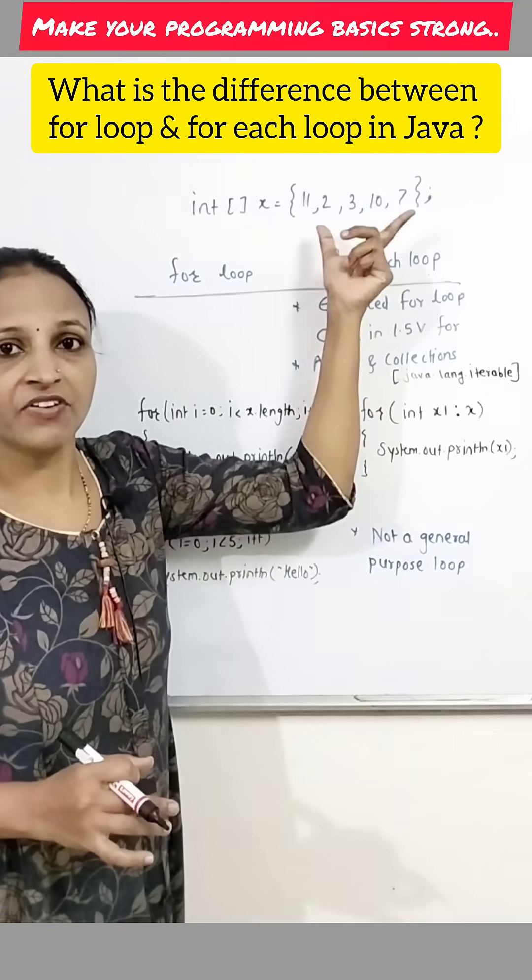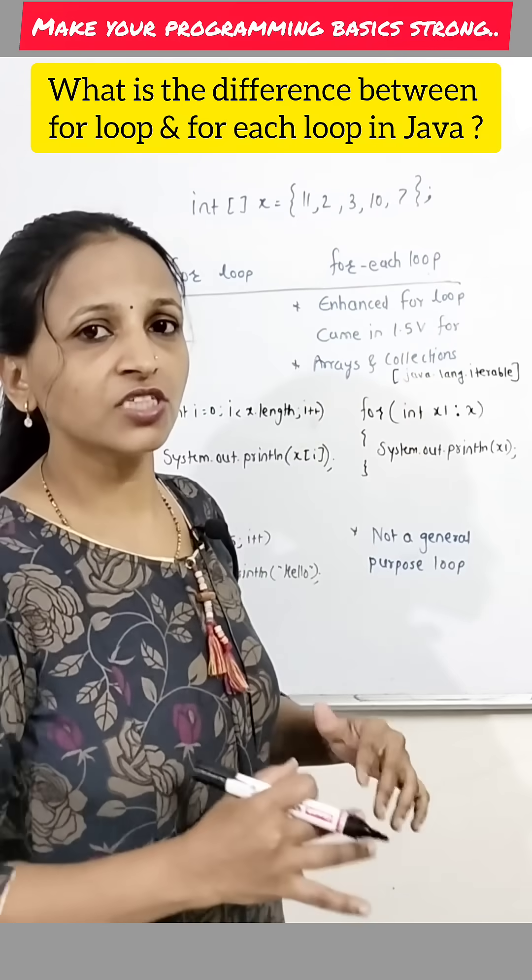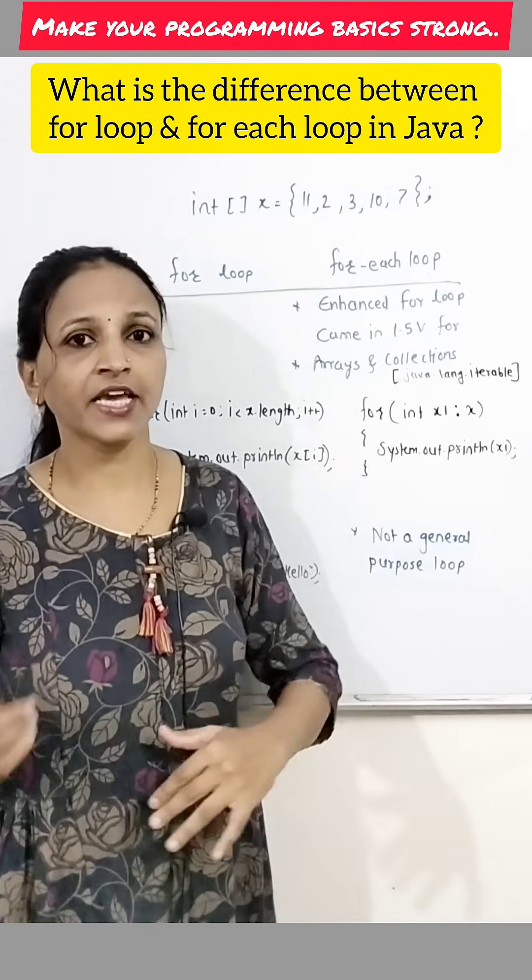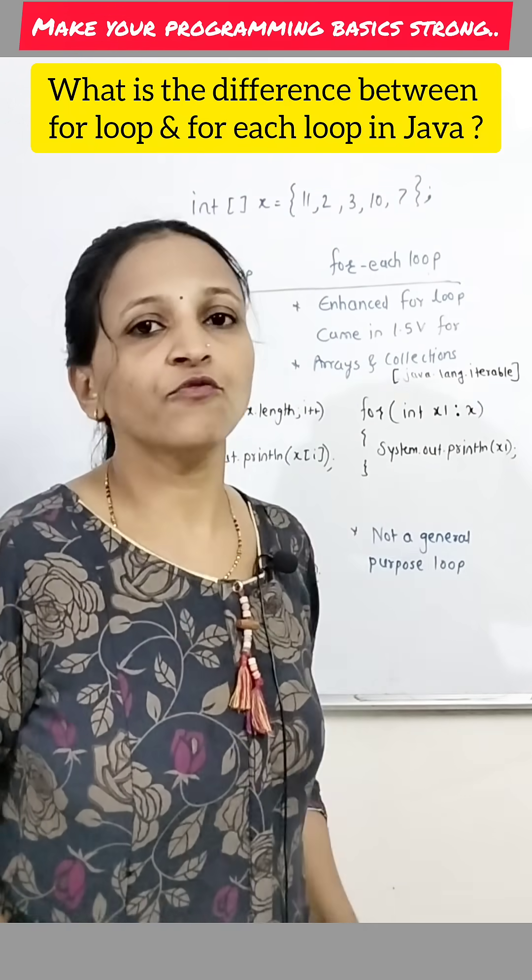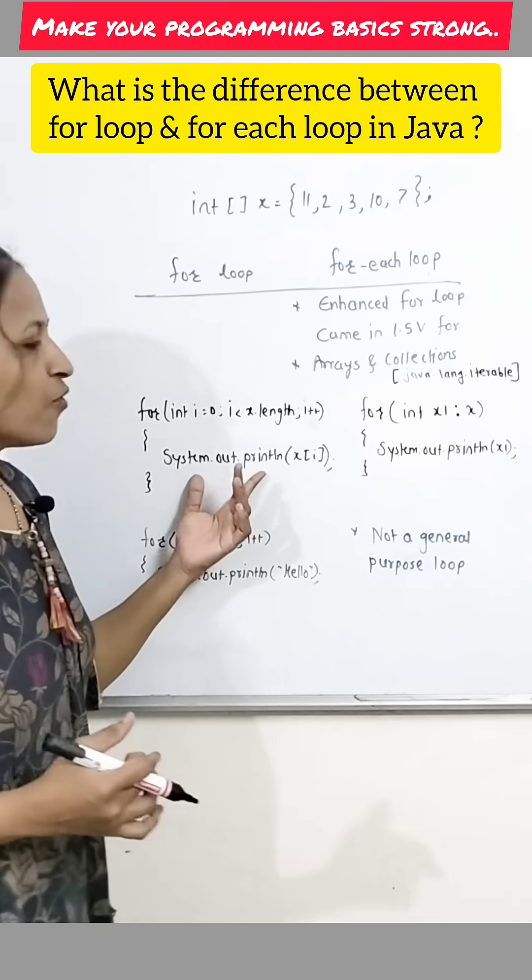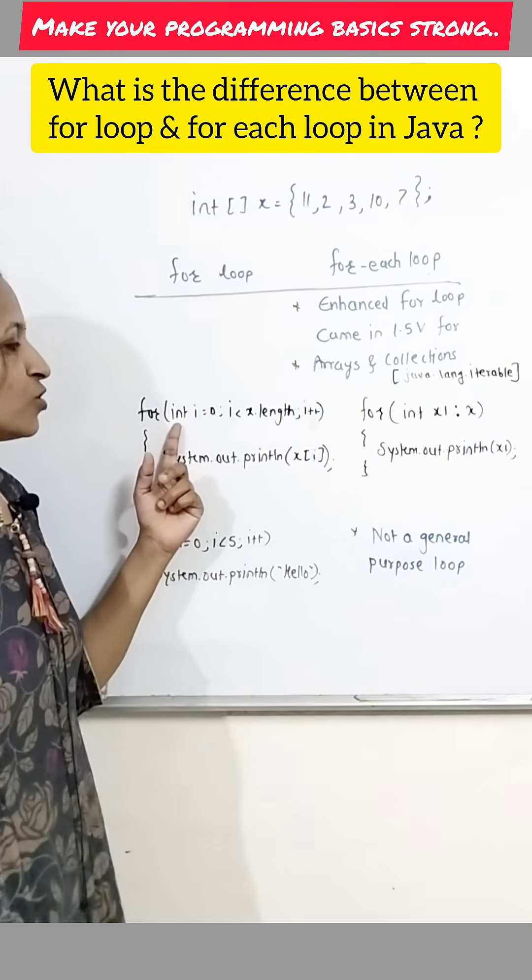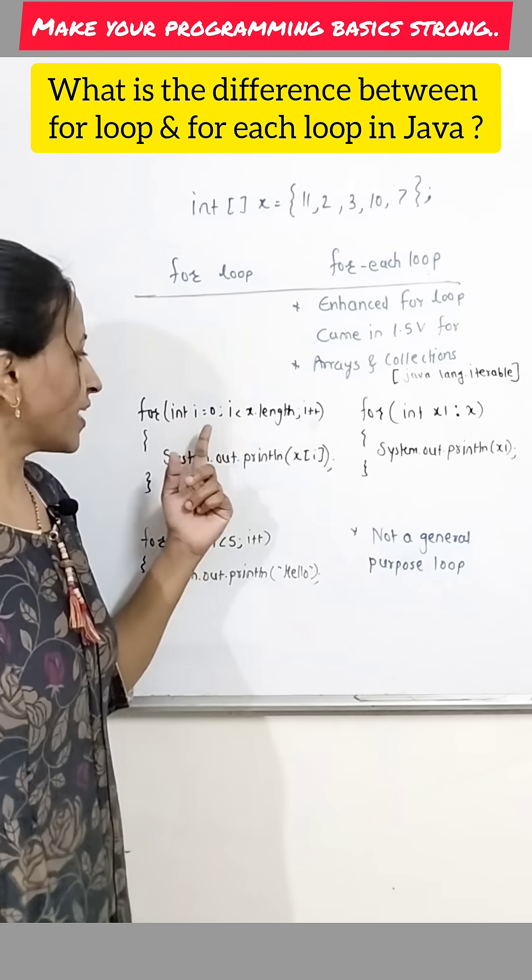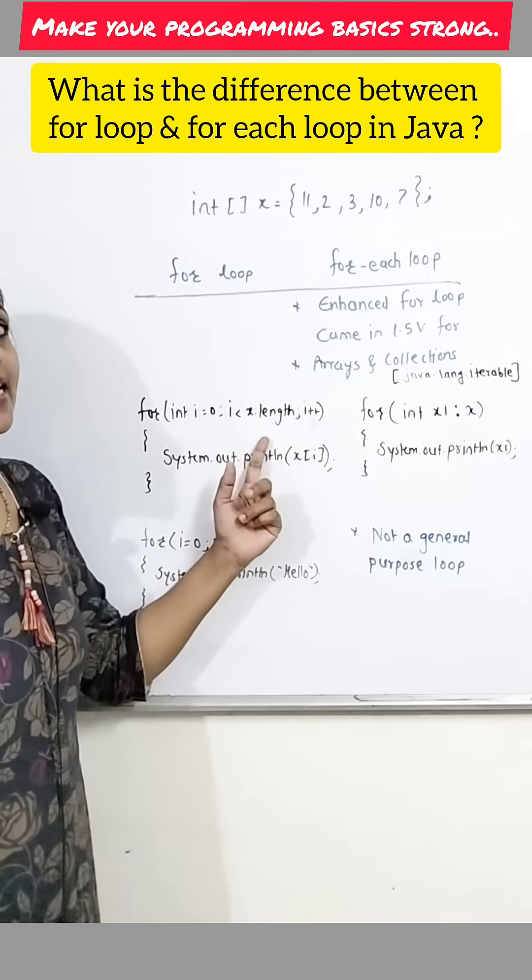We consider here array X having these contents. Now I want to just display these array contents, then I can use either for loop or for each loop. If you want to use for loop, then you know, like we have to just place one counter variable here like i equals to 0, i less than X dot length.